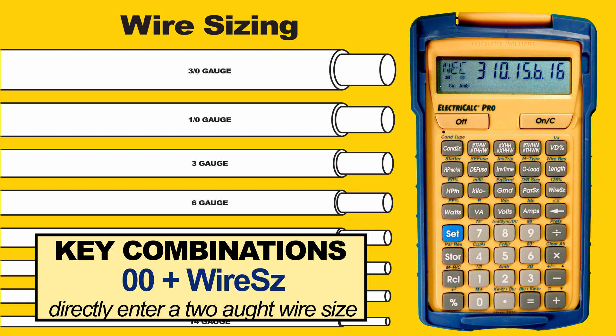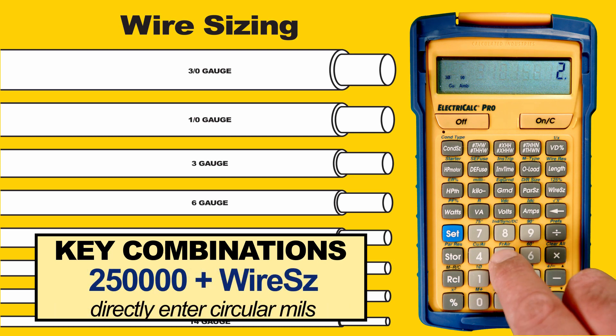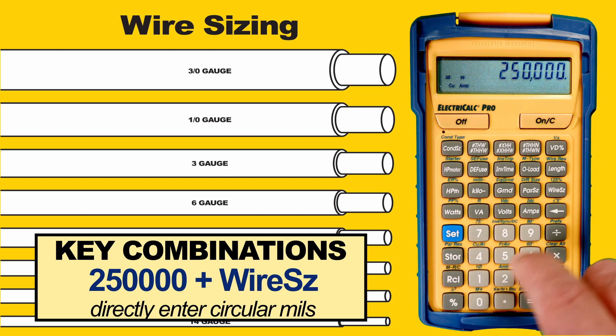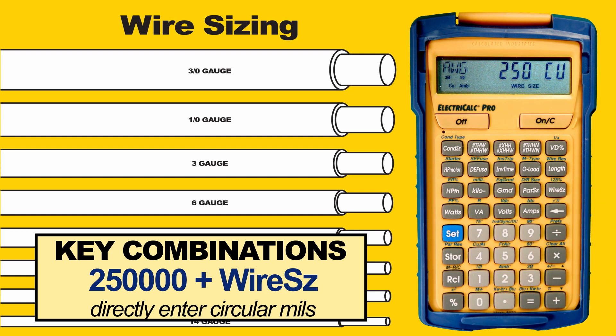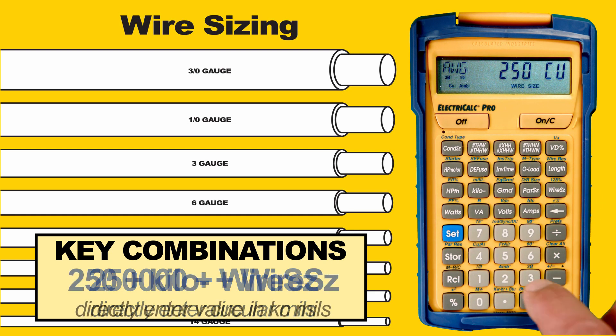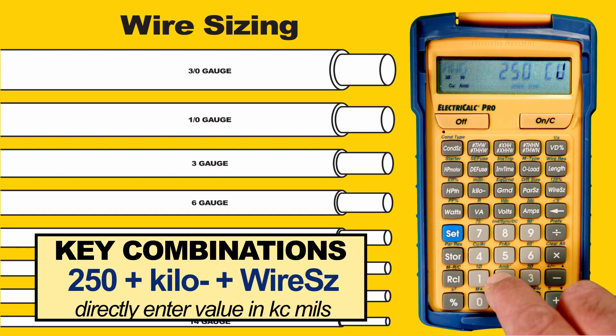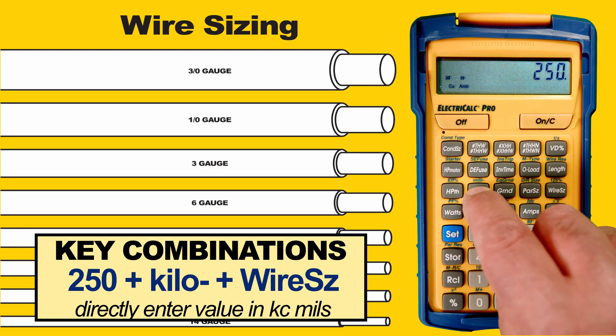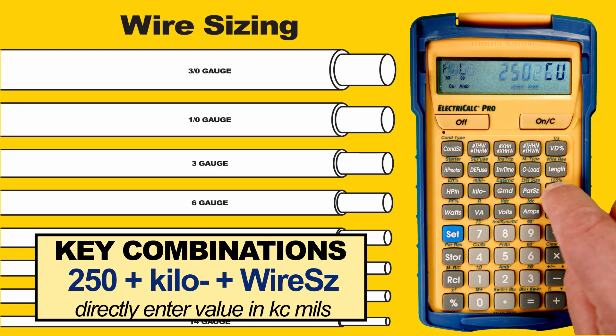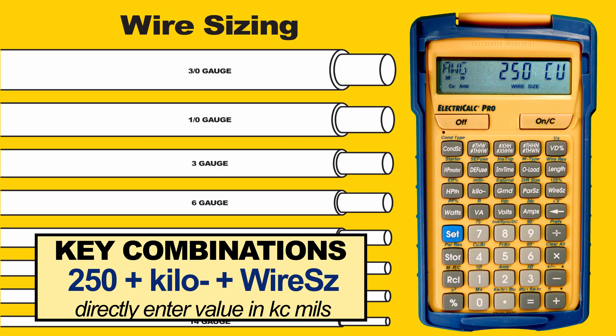You can enter circular mils directly as well — we will use 250,000. Enter the value, then press Wire Size and it's displayed. You can also enter it in kcmils: enter 250, then press Kilo, then Wire Size, and you get the same result but you can enter it a little bit faster. You can change variables and play what-if for different situations to find the optimal size conductor for the situation you're working in.